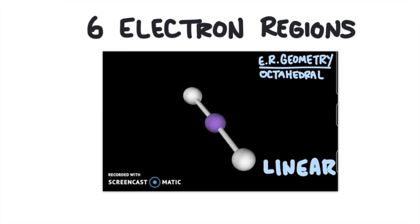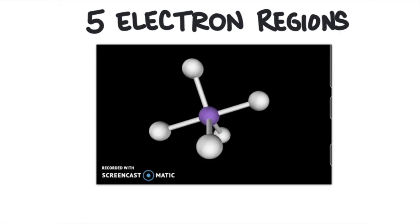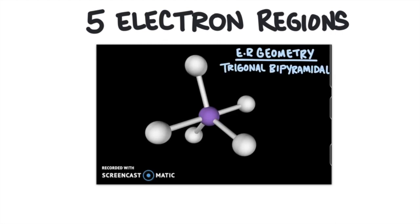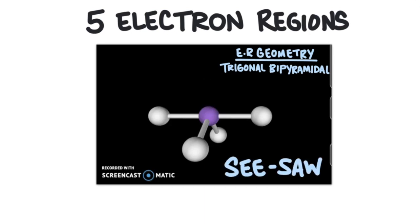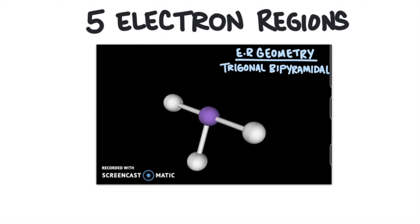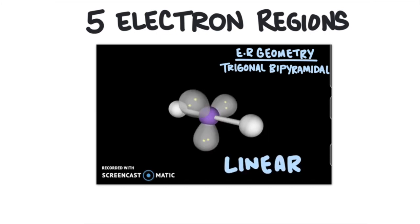Now let's look at different molecules with five electron regions. When we have five bonds and no lone pairs, it will be trigonal bipyramidal. With four bonds and one lone pair, it's called seesaw. With three bonds and two lone pairs, we have t-shape again. Two bonds and three lone pairs will be linear once again. Each of these molecular geometries has the same electron geometry because they all have five electron regions.